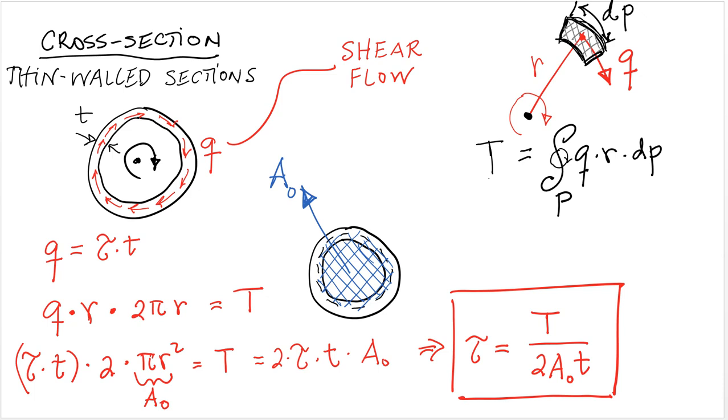Q is tau times T. And if we rearrange terms we see here that πR² is the area enclosed by the center line of the perimeter thickness. This is shown here in blue. And we use the term A₀. So the total torsion is equal to 2 times tau times the thickness times A₀.